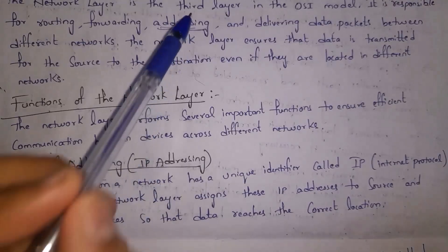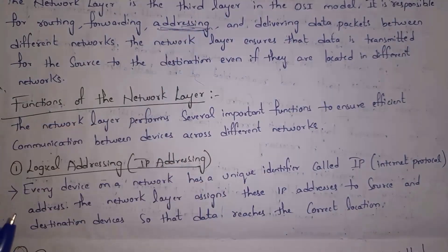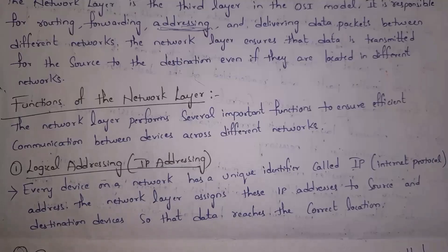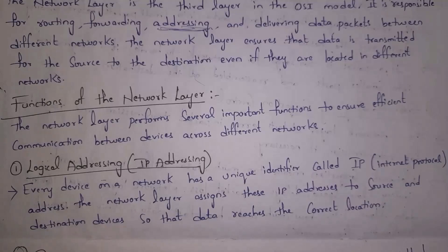The first function is logical addressing, also called IP addressing. Every device on your network has a unique identifier called an IP address, where IP stands for Internet Protocol. The network layer assigns IP addresses to source and destination devices so that data reaches the correct location. For example, devices like laptops, tablets, mobiles and computers — if any device is connected to a network, the network layer will give one number to the device, and we call that number an IP address.